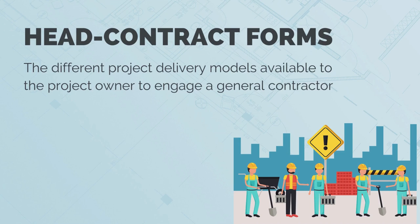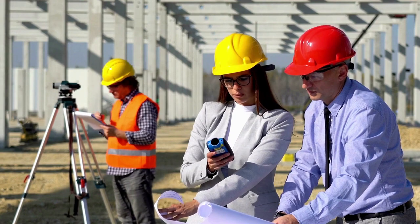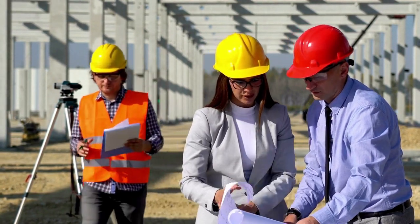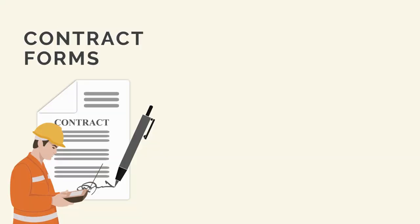Let's get started on Section 3 by looking at the different forms of head contract. These are the different commercial structures and project delivery models the project owner can use to engage a general contractor. It's important to understand all these different forms, as there is a significant amount of difference between them, and the form chosen shapes how the head contractor and owner will work together. We'll start off by broadly going through some of the key criteria by which these contract forms differ, then move on to talking about the most commonly used forms.